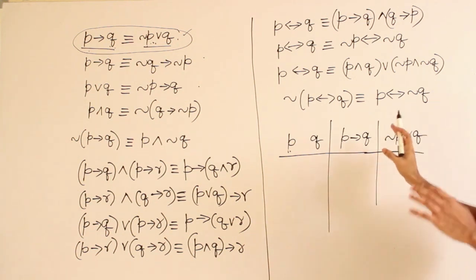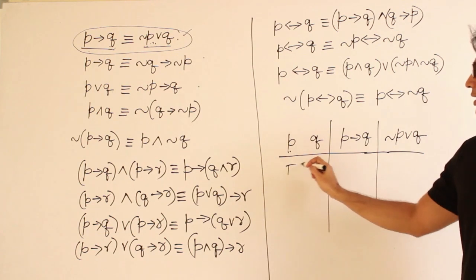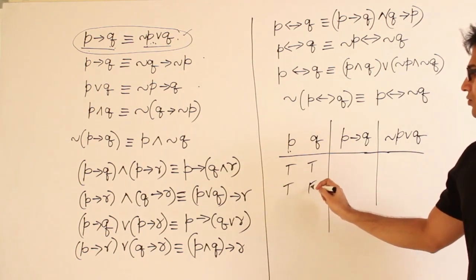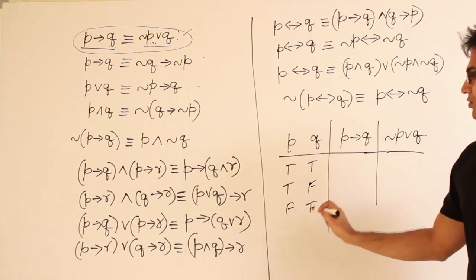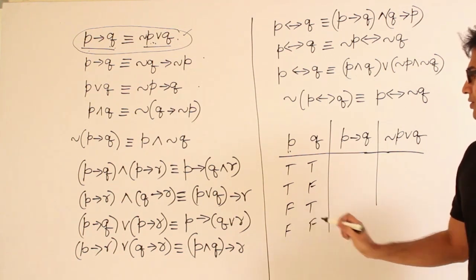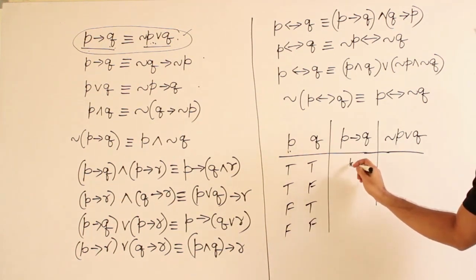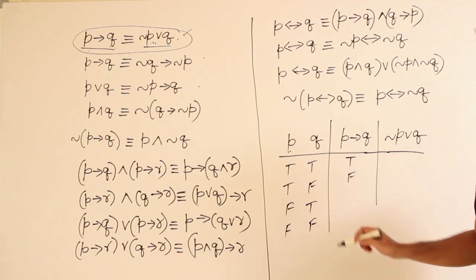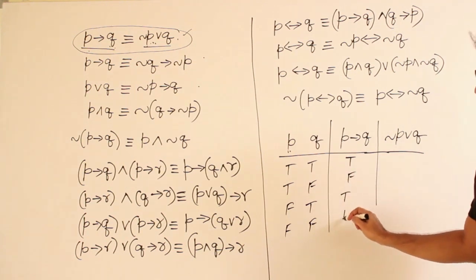both of them are supposed to give me the same value. That is the meaning of it, which means, let's say this is true, true, true, false, false, true, and false, false, right? So we know this already. True, false, true, true.